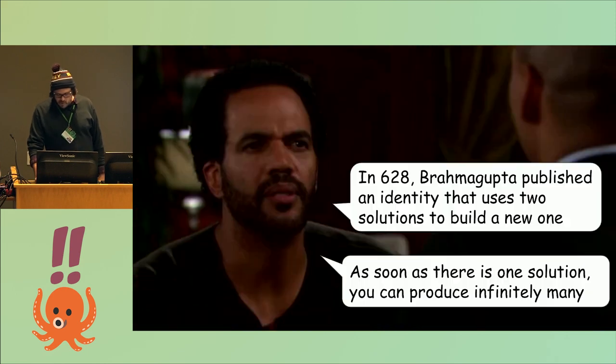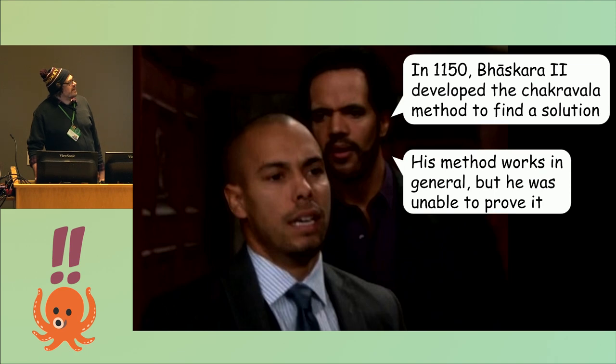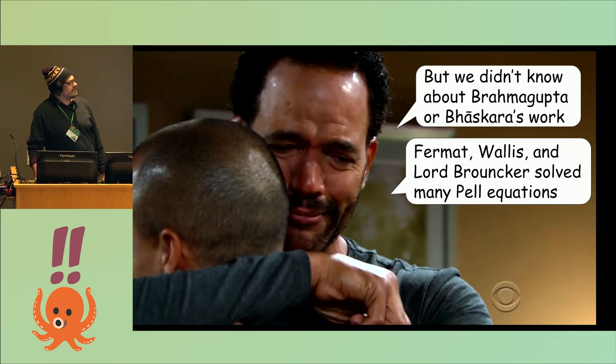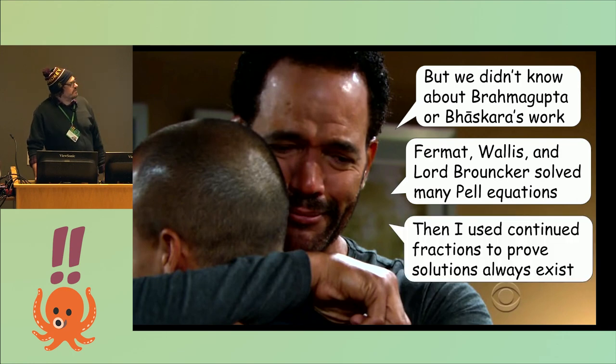Actually much earlier than that, the Indians figured out how to do this. In 628, Brahmagupta figured out that if you have one solution, then you have infinitely many. Bhaskara II had a method for producing that first solution. But the Europeans didn't know about the Indians' work, so they did it totally separately. Fermat, Wallace, Lord, Brouncker, and then Lagrange came along and used continued fractions.